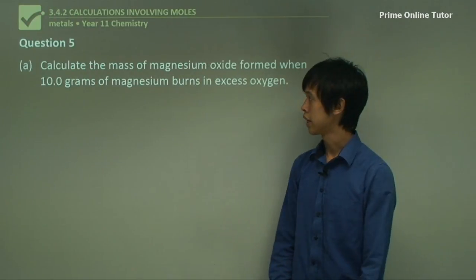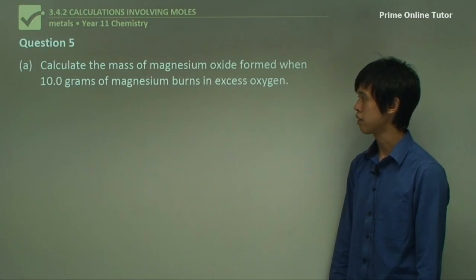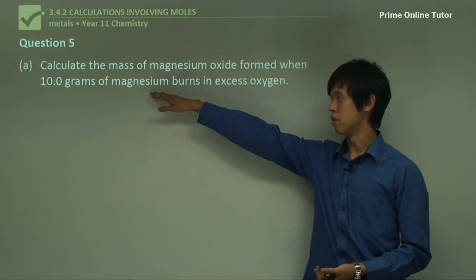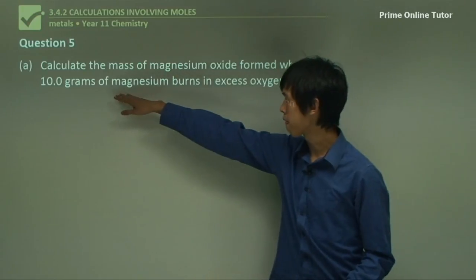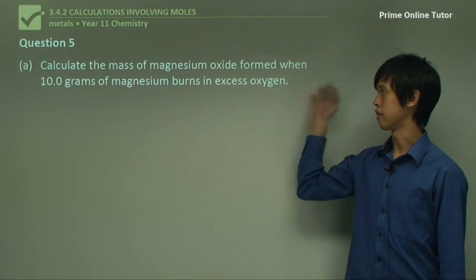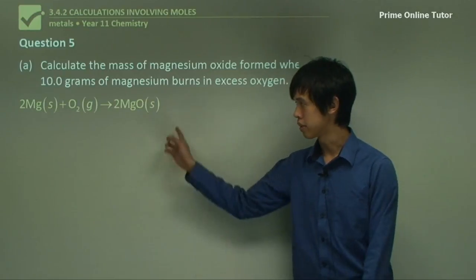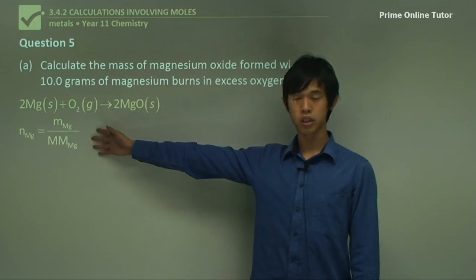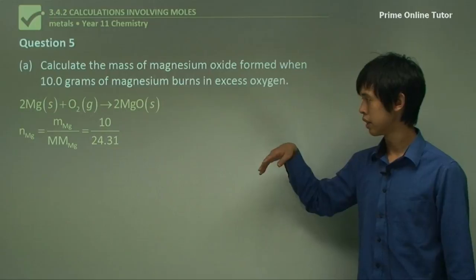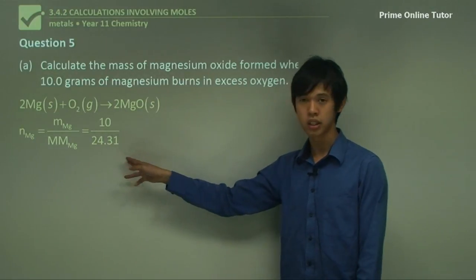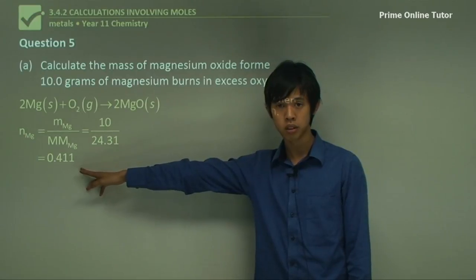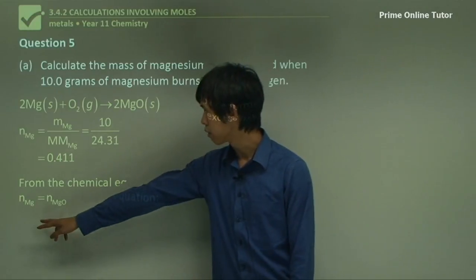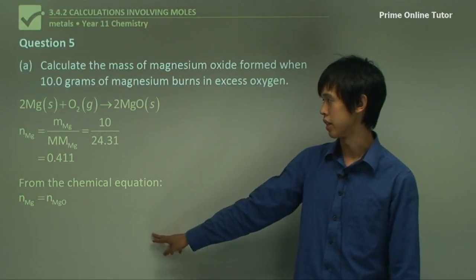Question 5. Calculate the mass of magnesium oxide formed when 10 grams of magnesium burns in excess oxygen. So now by saying excess oxygen, we know that there's more oxygen than is needed for magnesium to burn completely, so we don't have to worry too much about the oxygen. So again, we start with this equation. And then we use the molar equation, n equals m over M. So 10 over 24.31 gives you 0.411 moles of magnesium. And from the chemical equation, we can see that the number of moles of magnesium oxide equals the number of moles of magnesium. You can see 2, 2, so the ratio is 1 to 1 because they've got the same numbers at the front.